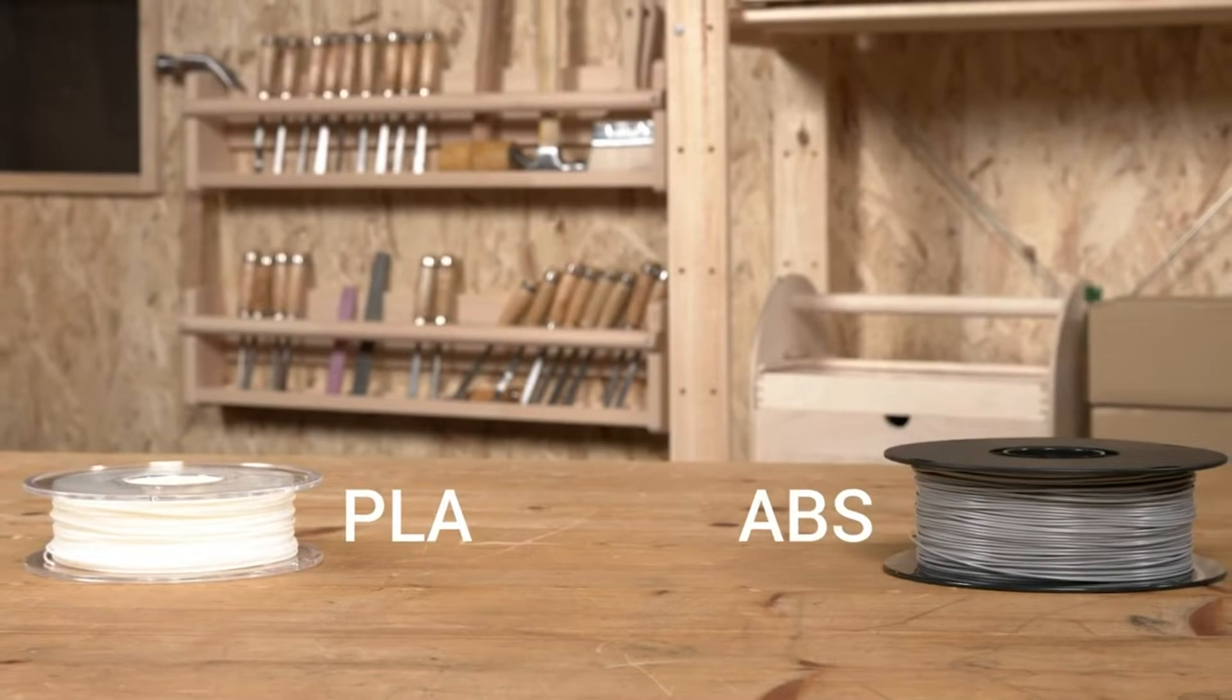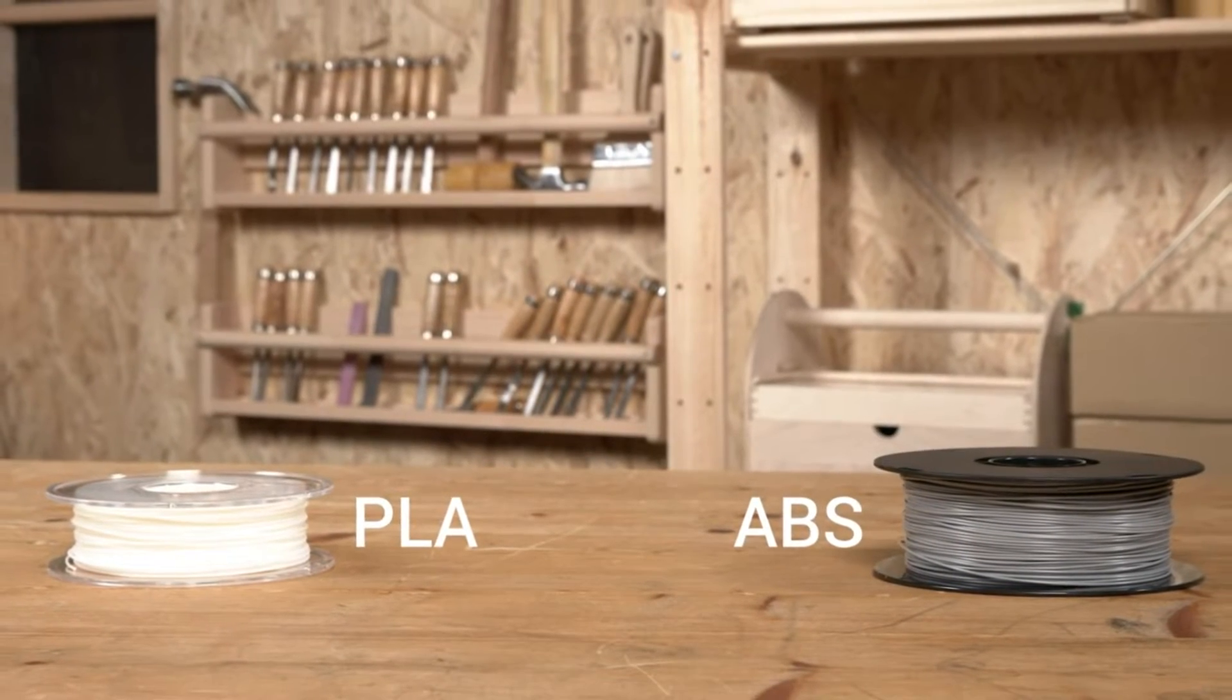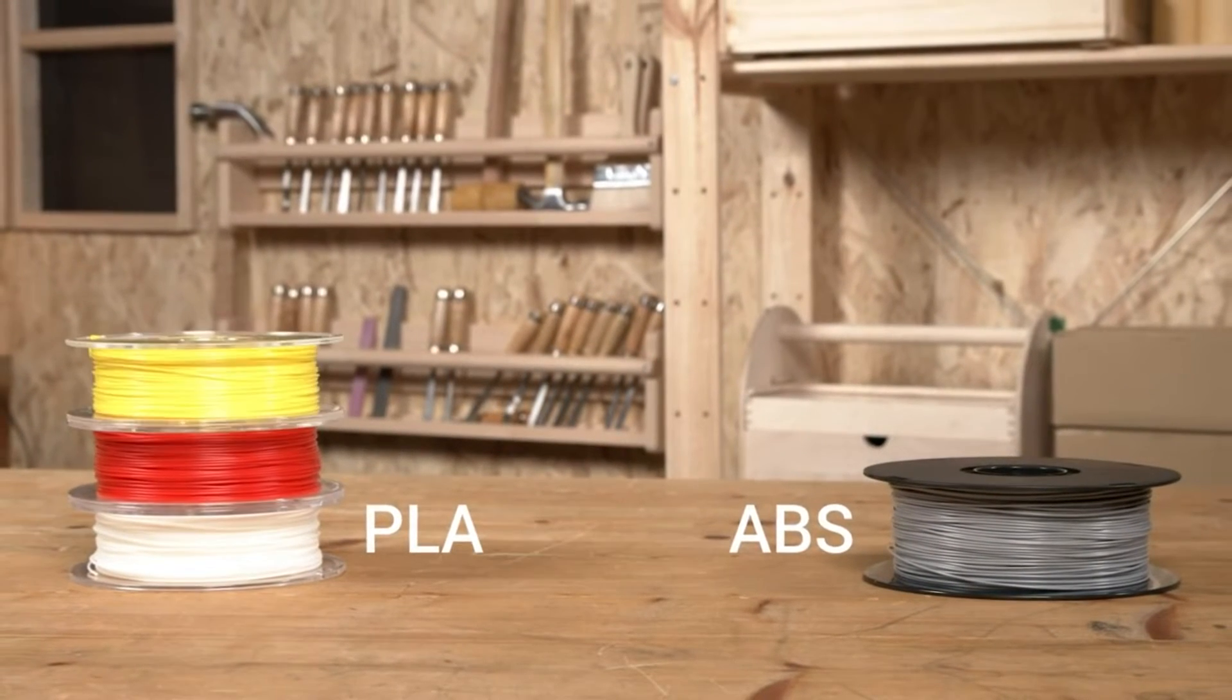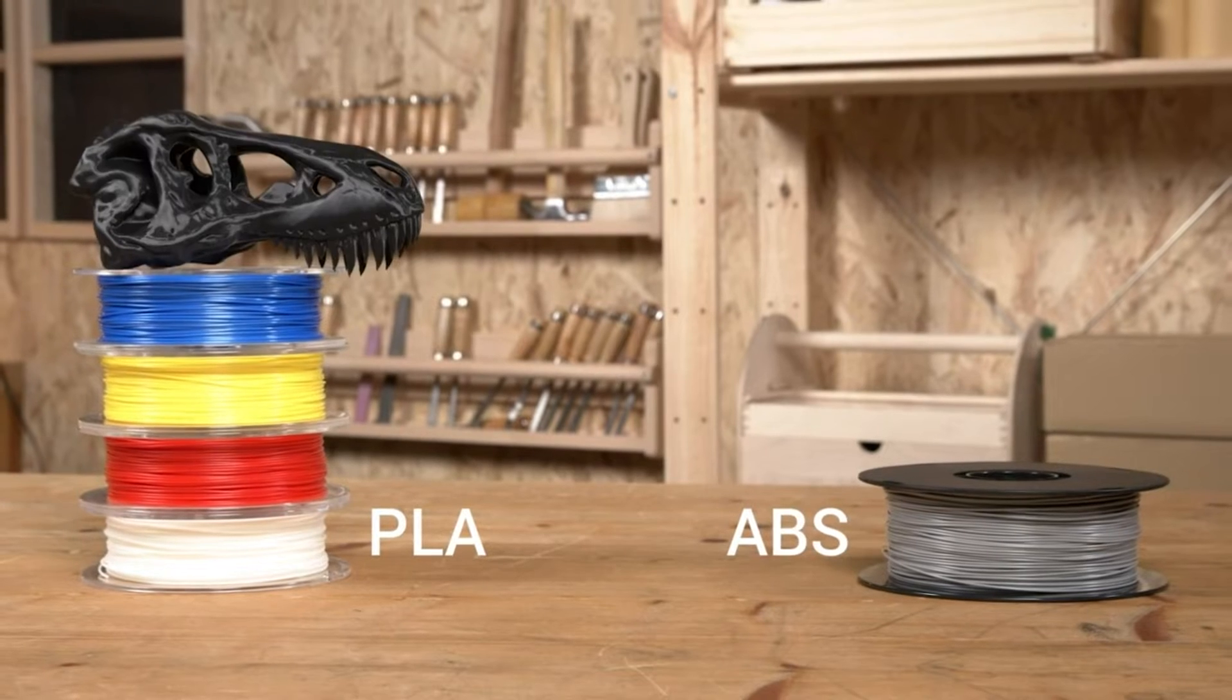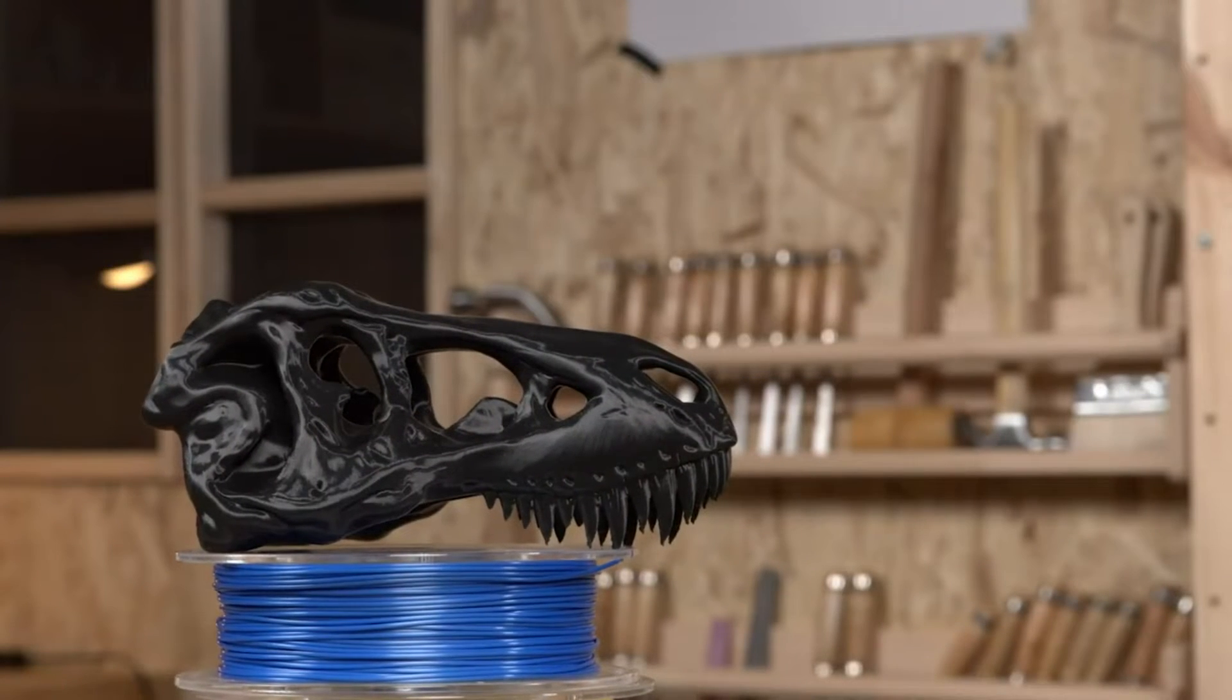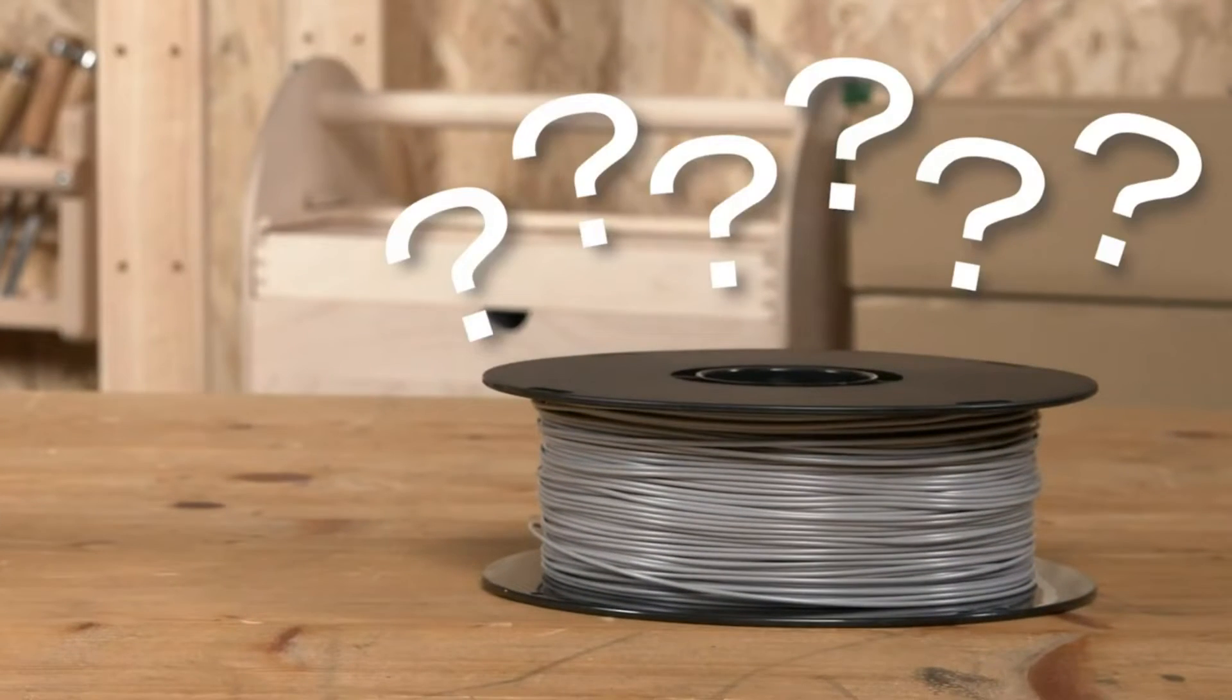Though PLA and ABS are said to be the most used types of materials in 3D printing, most of us take PLA as our go-to filament. It's cheap, easy to print with, available in so many colors, and creates strong prints with a nice look. Sounds perfect, but if so, why do we need ABS?